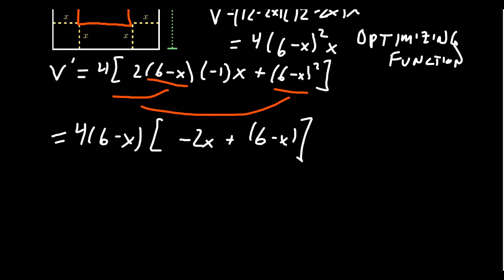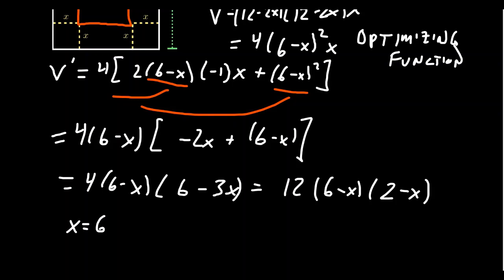Combining some like terms, we end up with 6 minus 3x, and 6 minus 3 has a common factor of 3 again, so factor that out. So we're going to get 12 times 6 minus x, and then we get 2 minus x. So we're going to find two critical numbers, x equals 6 and x equals 2.